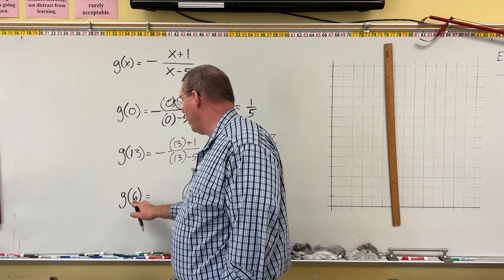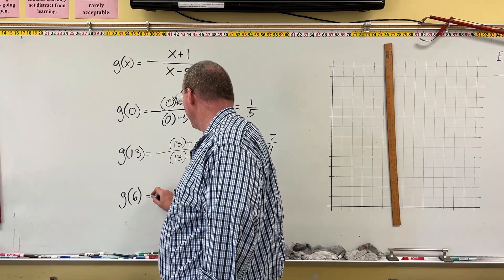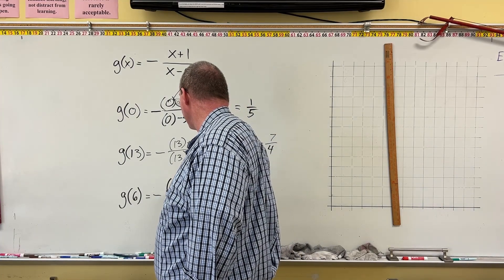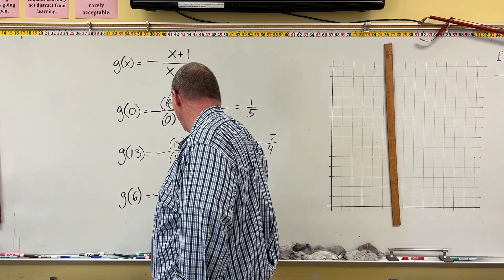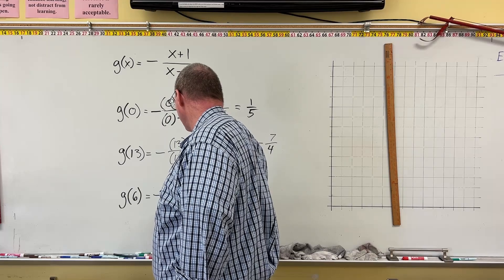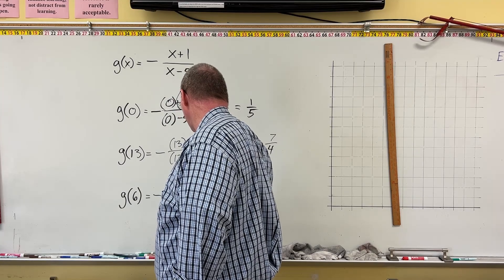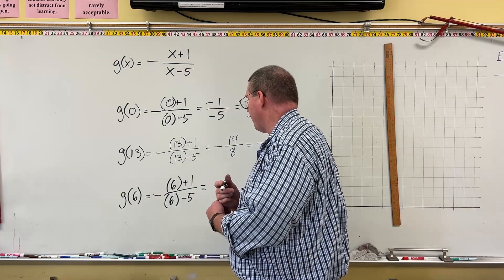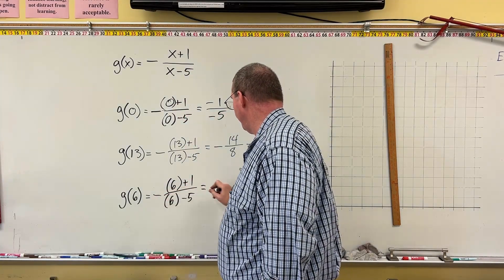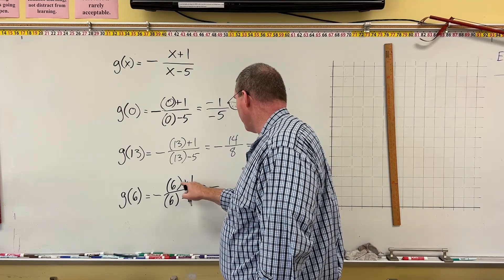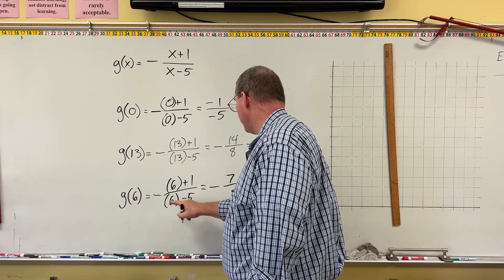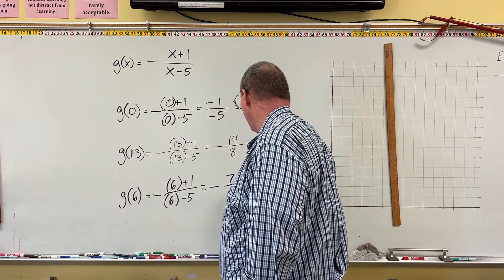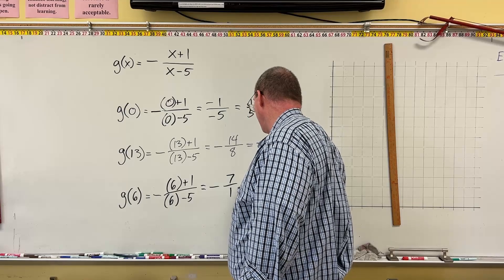For an input of 6, we compute: negative (6 + 1) over (6 − 5). That's 6 + 1 = 7 in the numerator and 6 − 5 = 1 in the denominator. Seven divided by 1 is just 7, so this is negative 7. An input of 6 gives an output of negative 7.